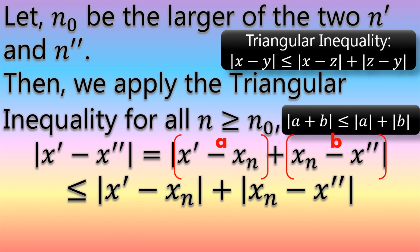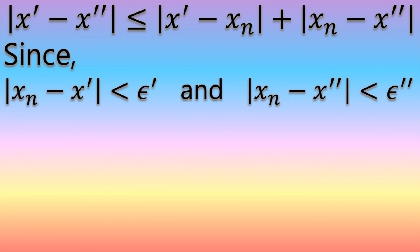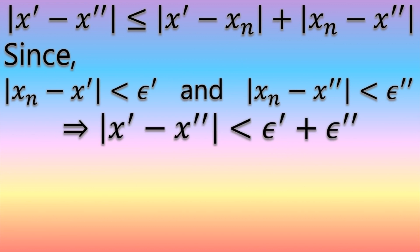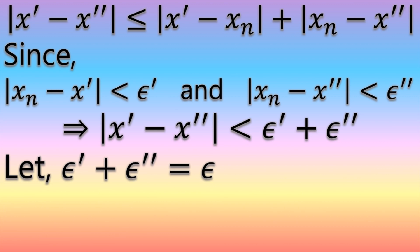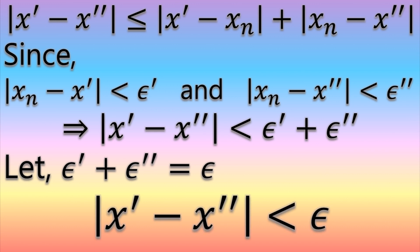Since |xₙ − x'| < epsilon' and |xₙ − x''| < epsilon'', this implies that |x' − x''| < epsilon' + epsilon''. We let epsilon' + epsilon'' equal epsilon for convenience, which implies that |x' − x''| < epsilon.